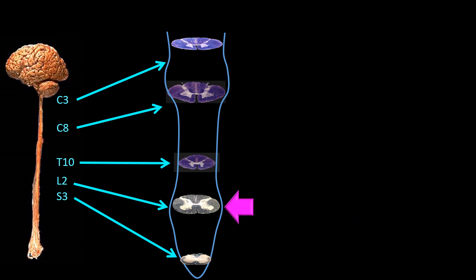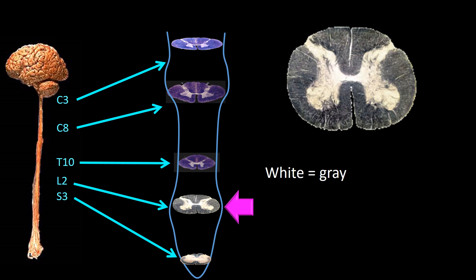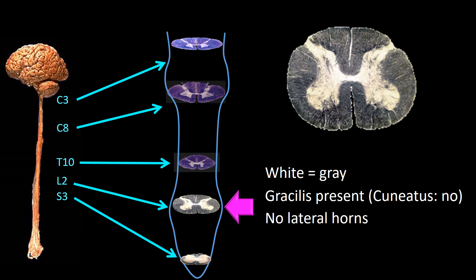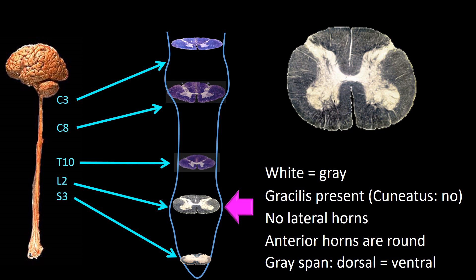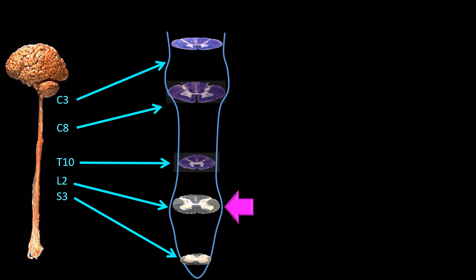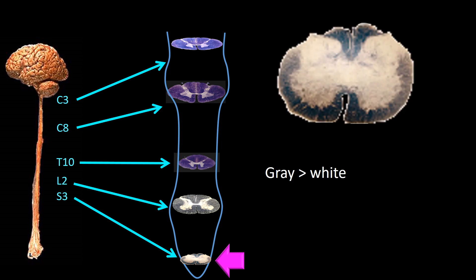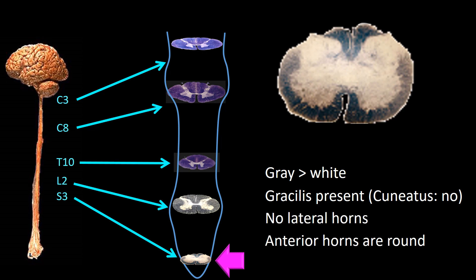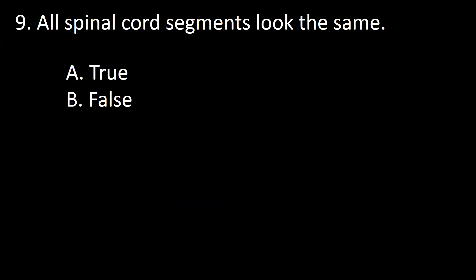From T10 to L2, at the L2 level the amount of white and gray matter is about equal, gracilis is present, cuneatus is not, lateral horns are not present, anterior horns are round, and gray ventral and dorsal spans are about equal. From L2 to S3, there is more gray matter than white matter, gracilis is present but cuneatus is absent, no lateral horns, anterior horns are round, and dorsal and ventral gray spans are about equal. So the answer to this question is false.